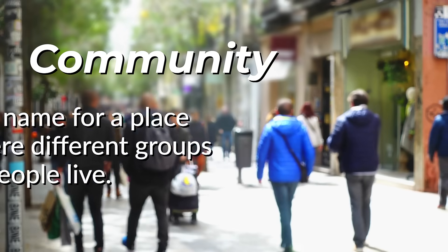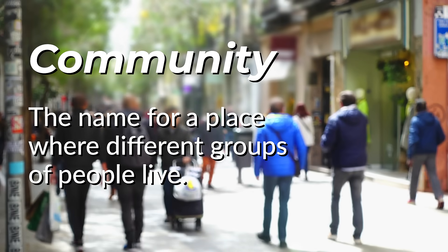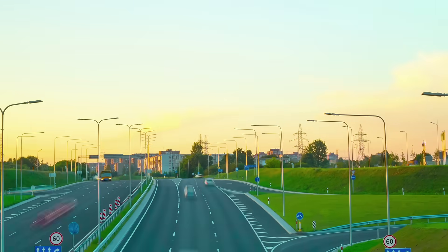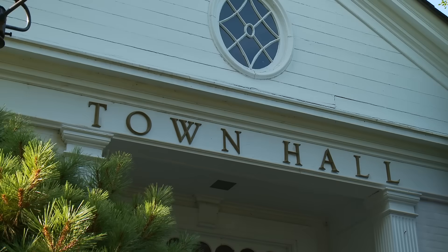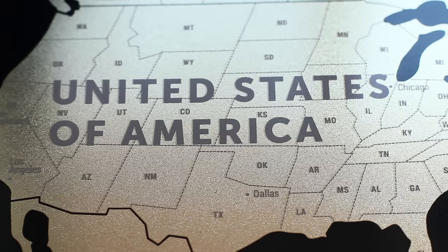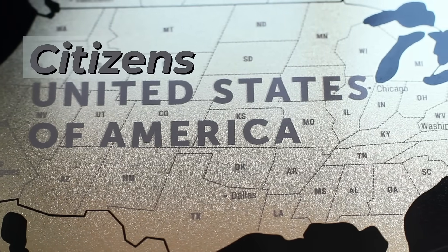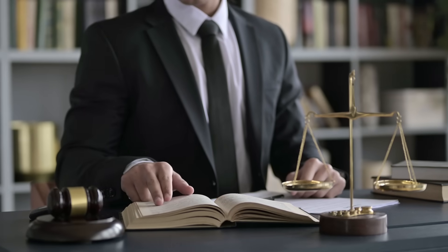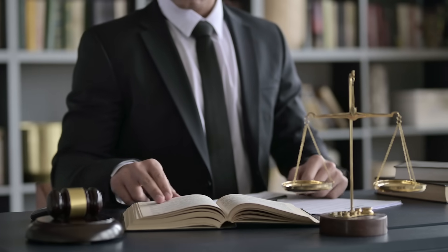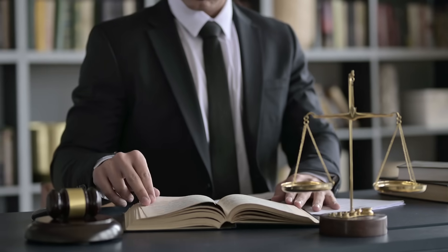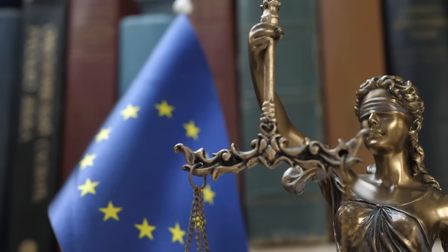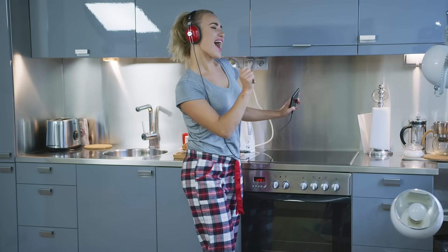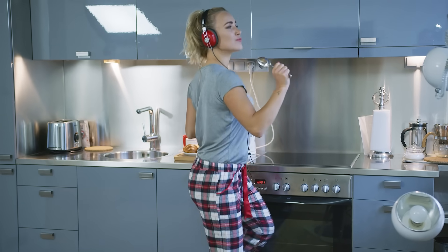A community is a name for a place where different groups of people live. The members of a small or large community, like a town, state, or country, are called citizens. Citizens that live in the same community usually follow the same rules.